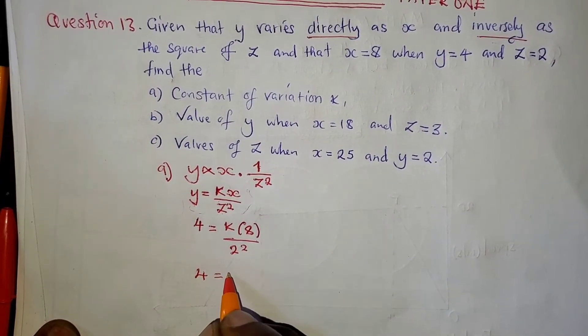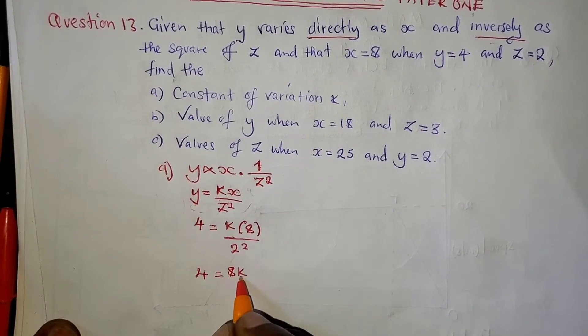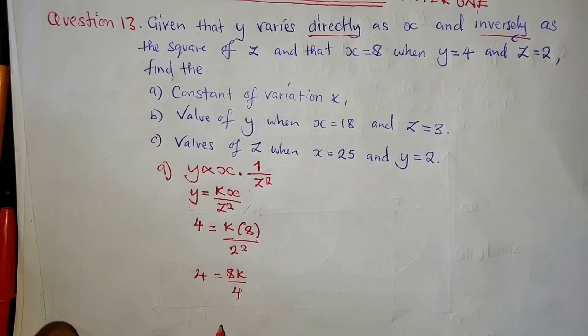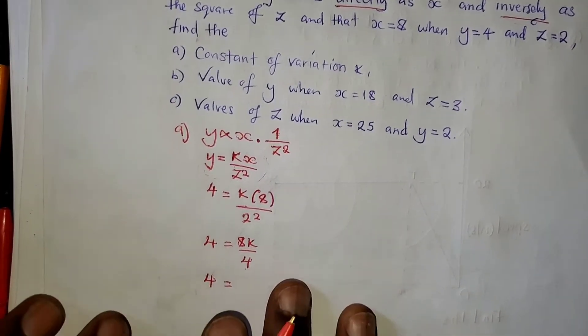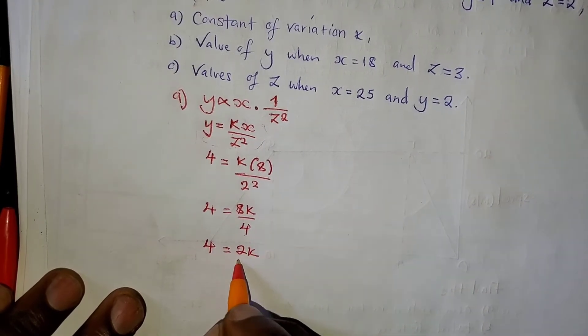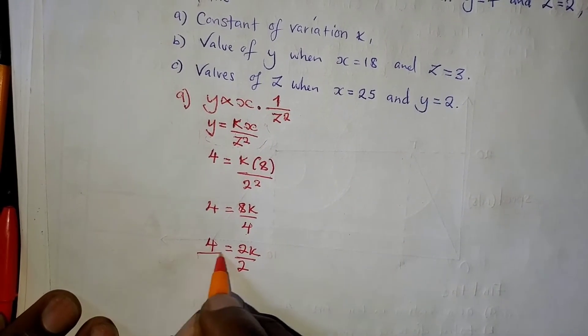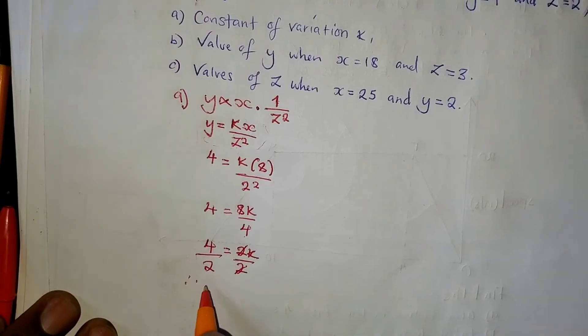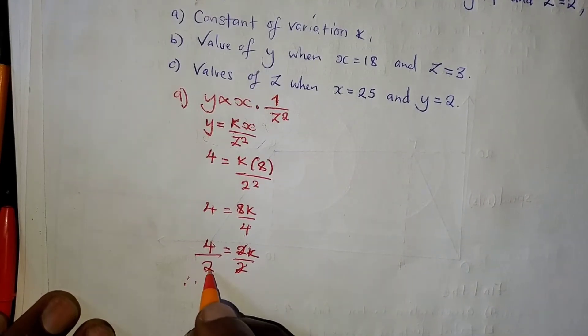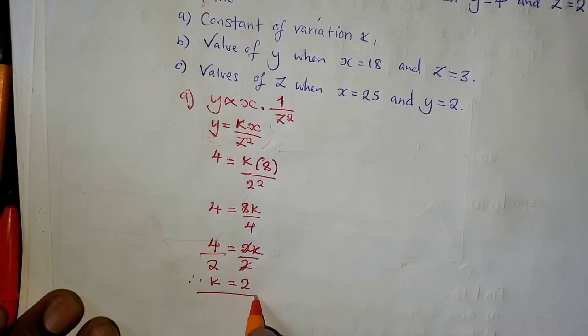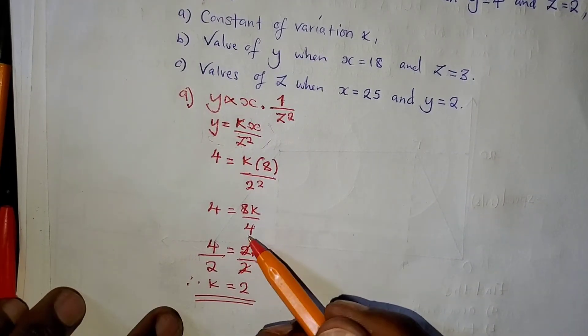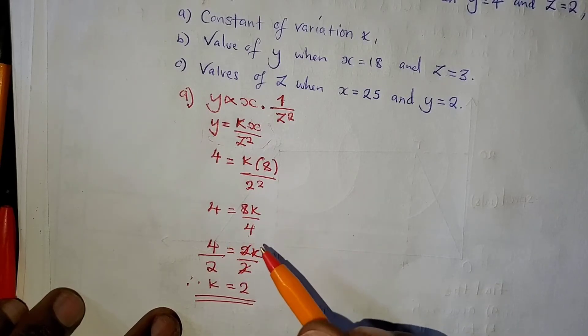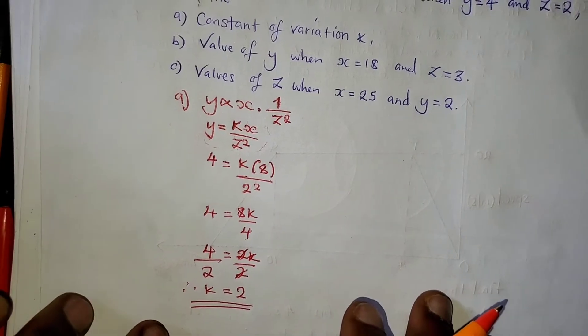So, 4 equals 8K over 4. 2 squared is 4. 8 divided by 4 is 2, so we have 4 equals 2K. We are going to divide both sides by 2 to make K independent. Therefore, the value of K, which is the constant of variation, equals 2. So the constant of variation is 2.